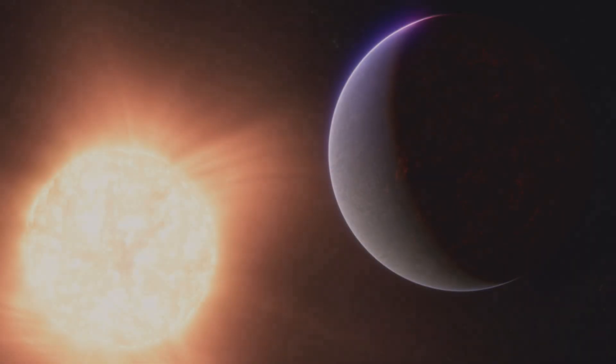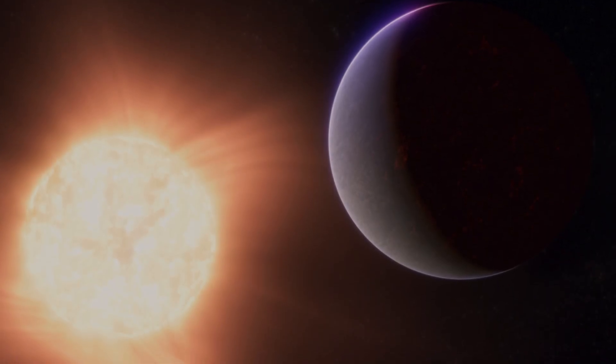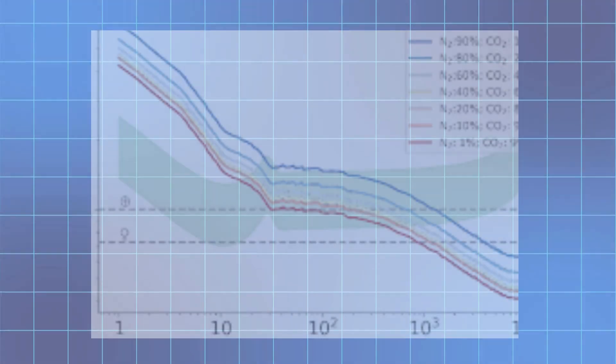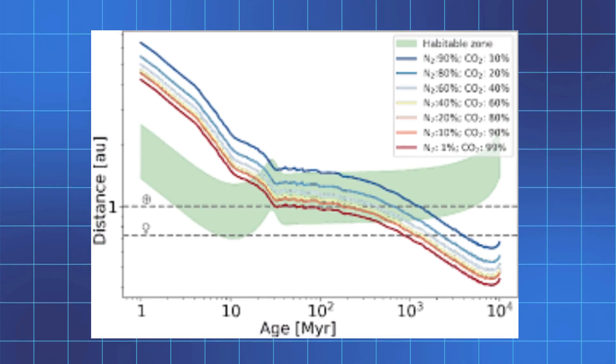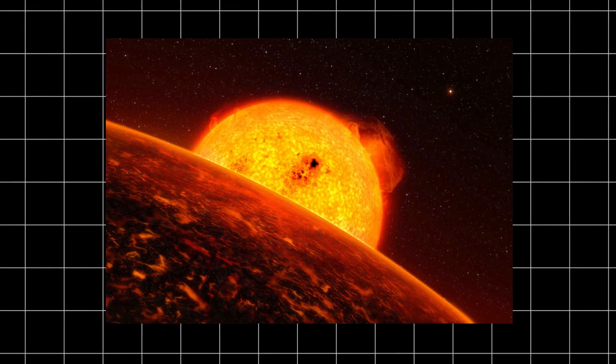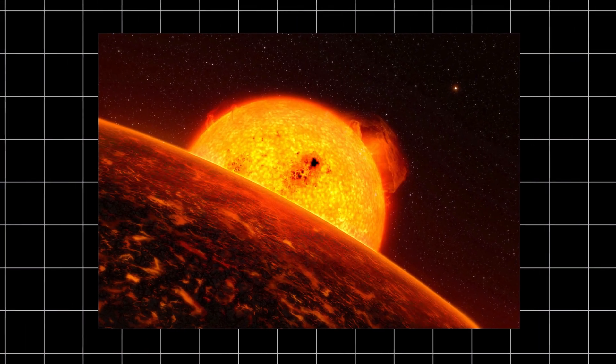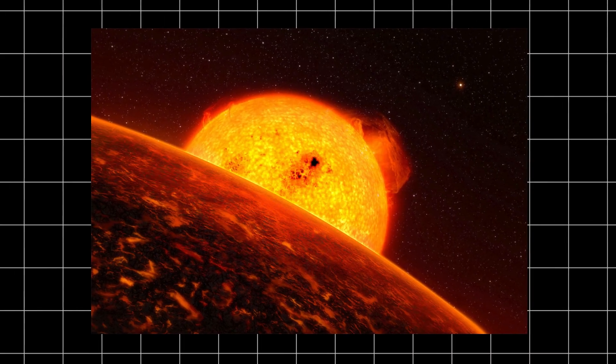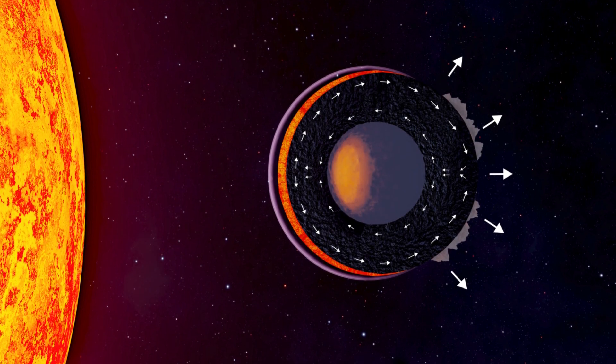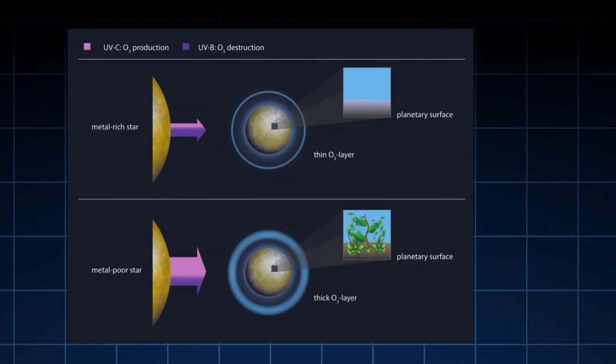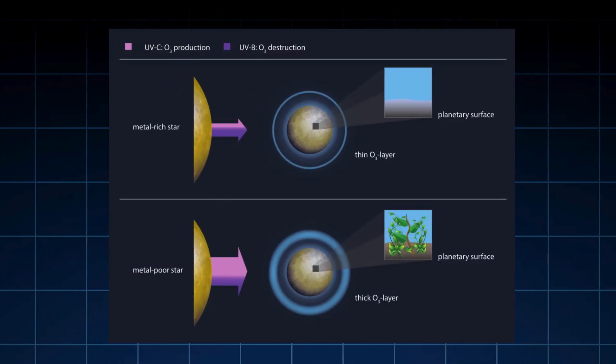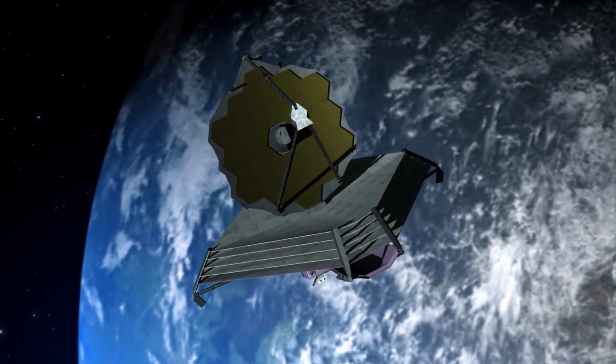As James Webb probed deeper into extreme environments, it uncovered rocky planets retaining atmospheres under bombardment that should have erased them entirely. Ultra-hot super-Earths like TOI-561b, orbiting so close their surfaces glow with magma, display emission spectra indicating thick gaseous shrouds rather than barren stone. These envelopes, rich in volatiles, imply powerful retention or outgassing from molten interiors, challenging the notion that proximity alone dooms atmospheric survival.